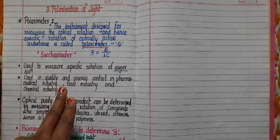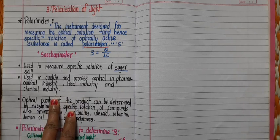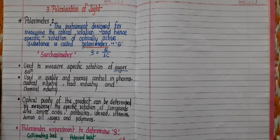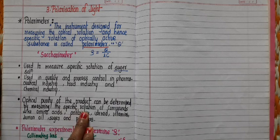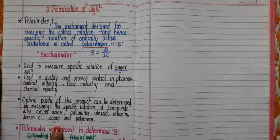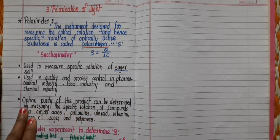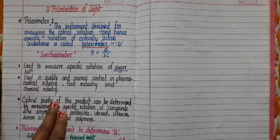In chemical industries, the quality and process control department uses polarimeters. By using a polarimeter, we can determine the optical purity of a product by measuring specific rotation of compounds like amino acids, antibiotics, steroids, vitamins, lemon oil, sugar, and polymers. That is why this polarimeter is used in pharmaceutical, food, and chemical industries.